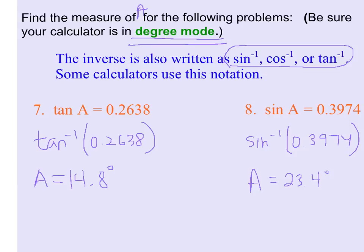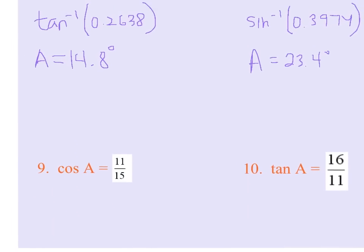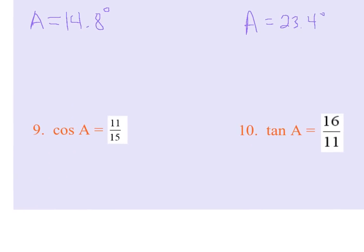And you'll want to pay attention to the directions because usually it'll tell you how to round your answers. Sometimes it'll want the nearest tenth. Sometimes it'll want the nearest whole number. So this would be 23.4. If it wanted the nearest degree, we would just say 23 degrees. Let me move this up a little bit here so we can see a couple other examples, 9 and 10.